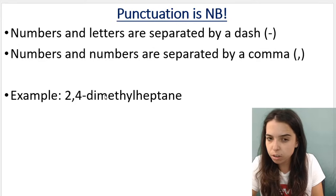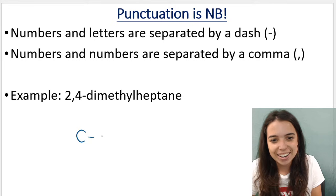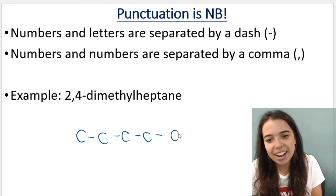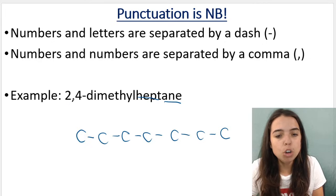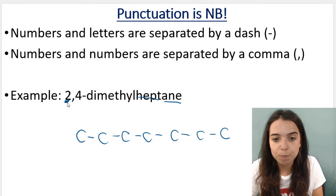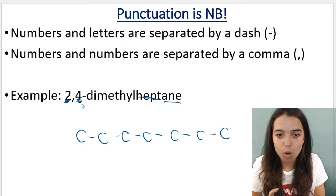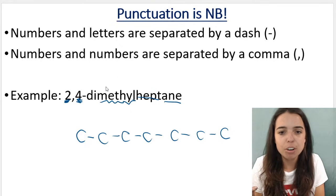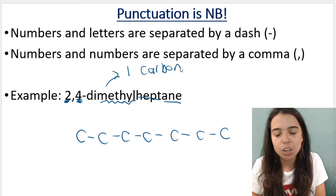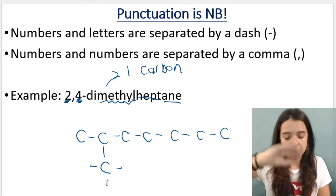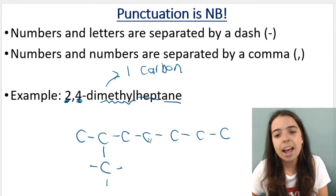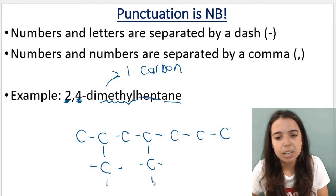If I had to draw out 2,4-dimethylheptane, heptane means seven carbons, so I draw a main chain of seven carbons. It's an alkane so only single bonds. Then 2,4-dimethyl — on carbon number two and on carbon number four I have methyl branches. Remember, a methyl branch has one carbon in the branch. You can draw the methyl branch at the bottom or at the top — it doesn't matter as long as it's on carbon two, and then again on carbon four there's another methyl branch.